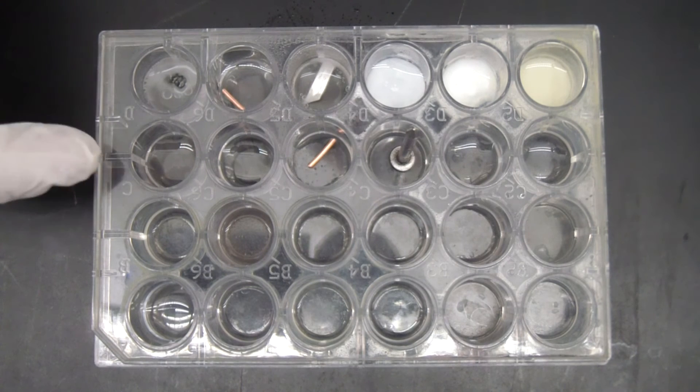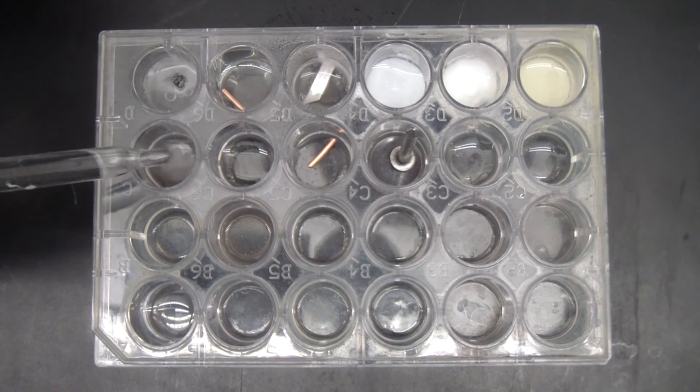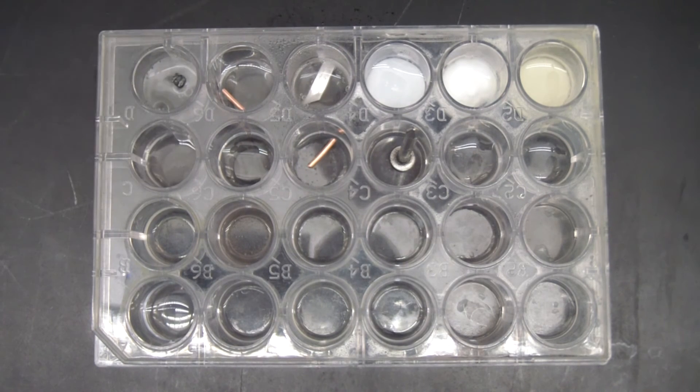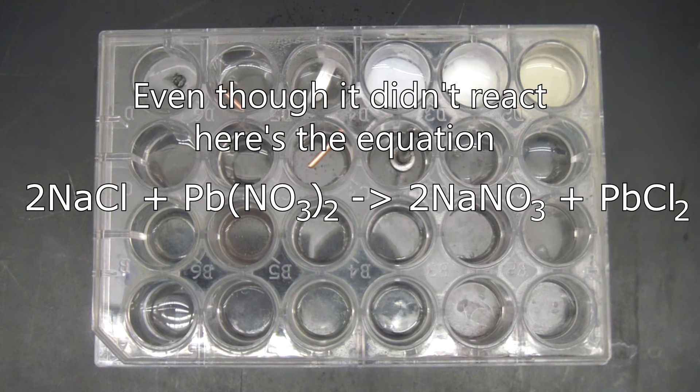And then we go down to the row to this well over here. We have some sodium chloride, to which we will add some lead nitrate, and we put that in, and not a whole lot happens. All right, so we get a clear no reaction on that one.